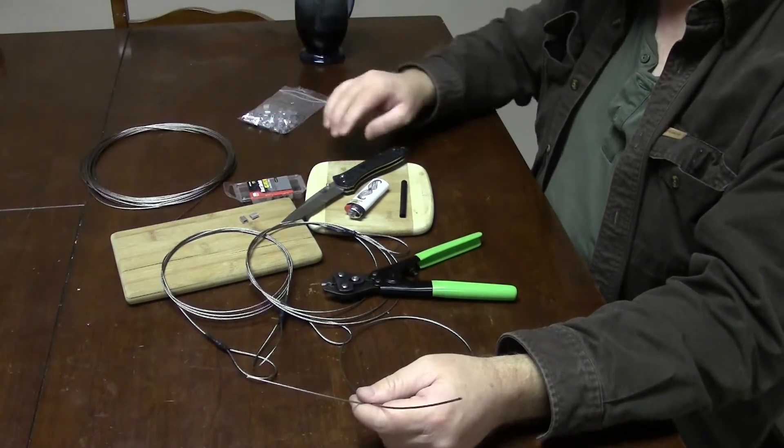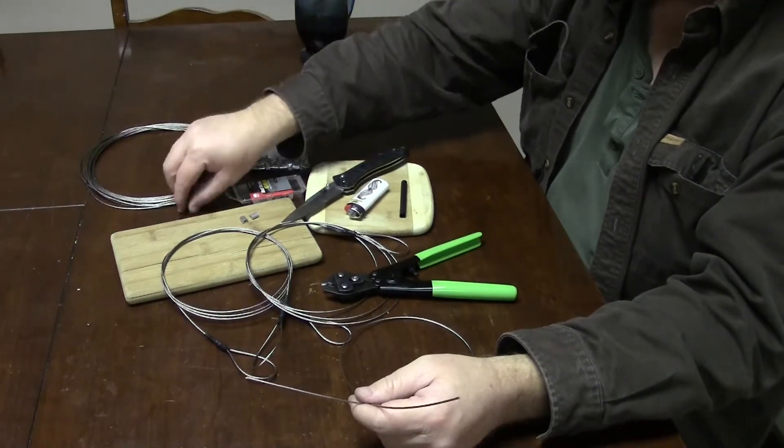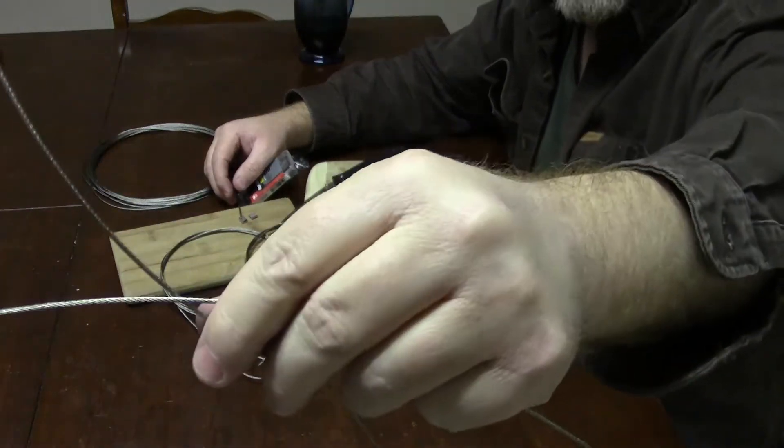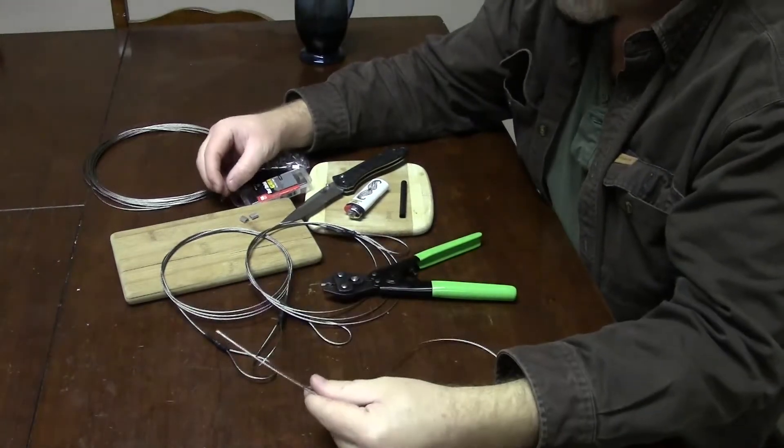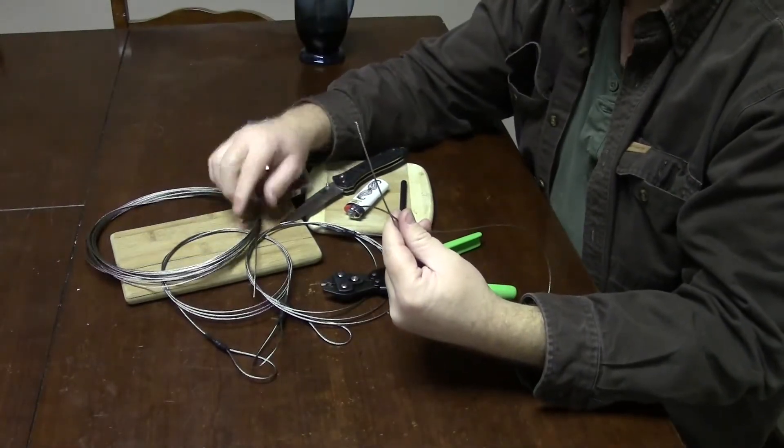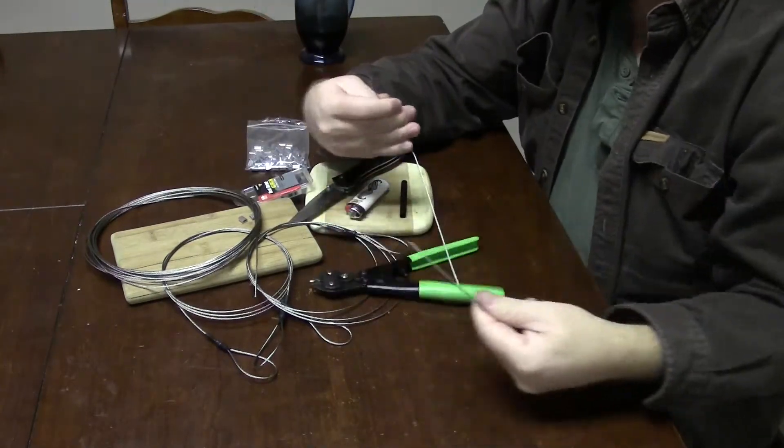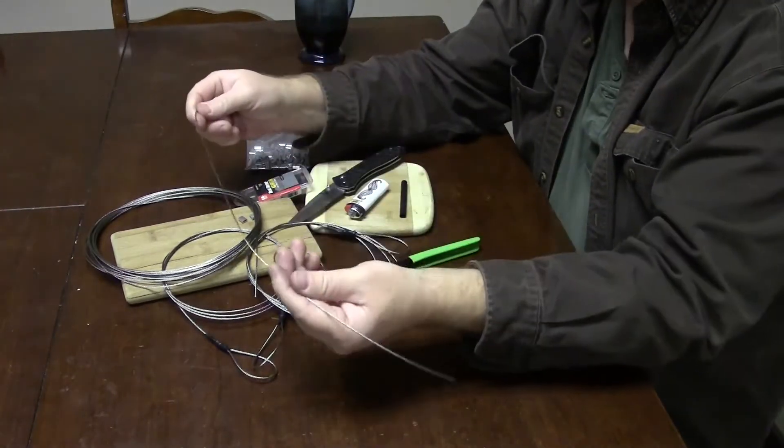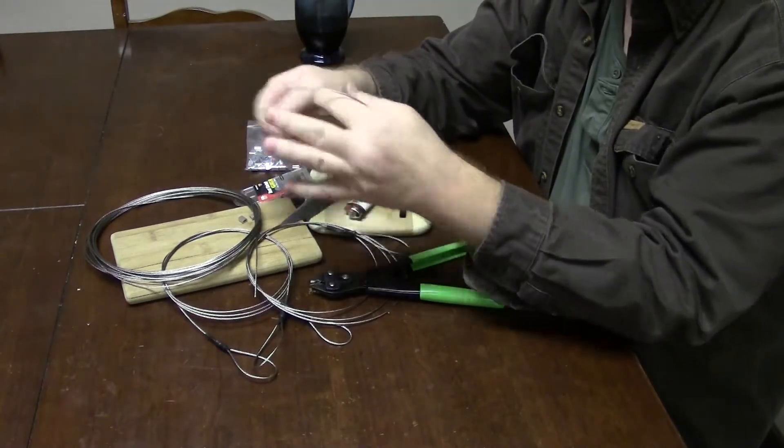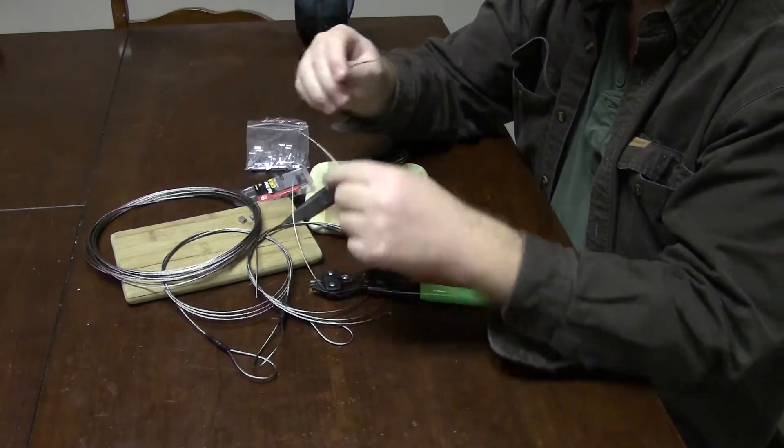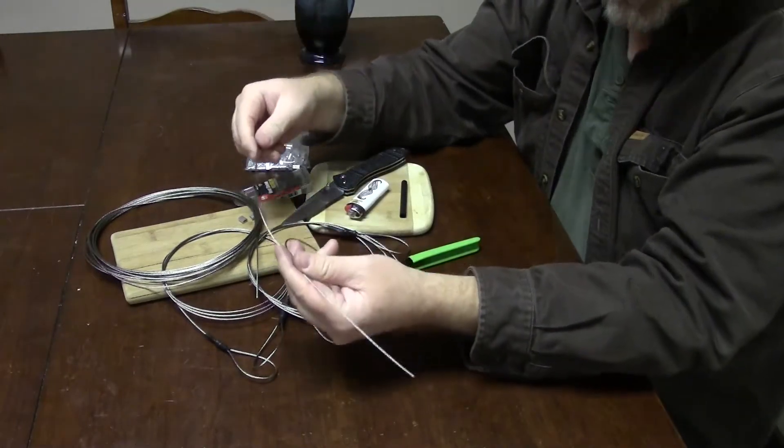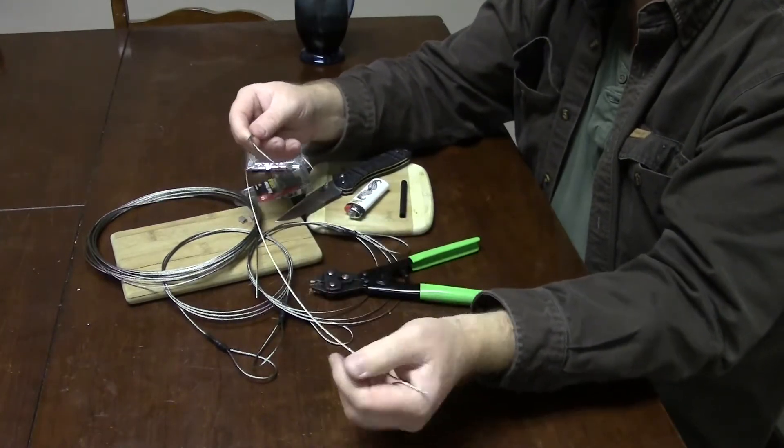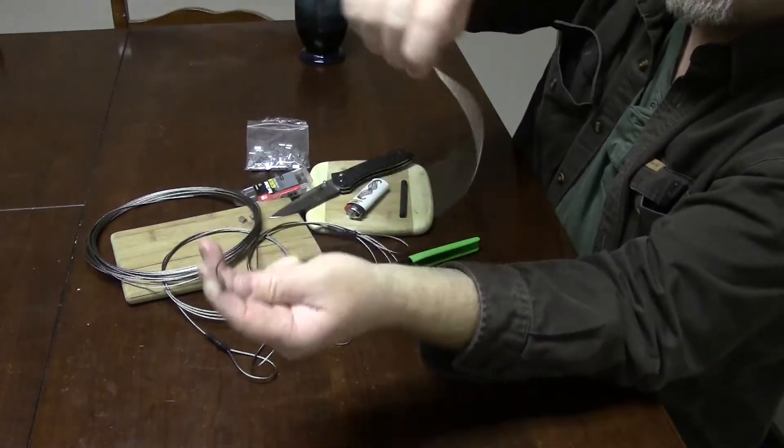What I have here is some 1/16 inch stainless steel wire rope. This stuff is about 480 pound test, so it's not too different in strength than, say, 550 cord. It's very flexible, very strong. It's pretty tough to damage this stuff, even twisting it around.